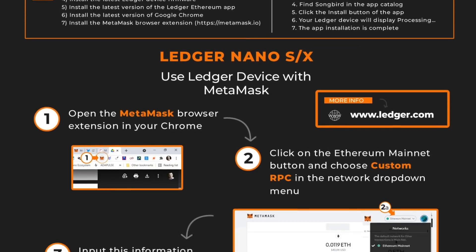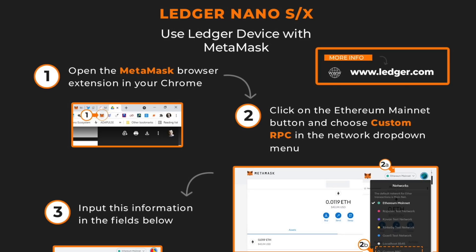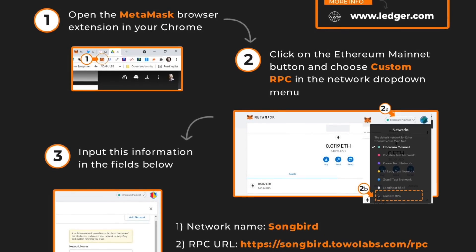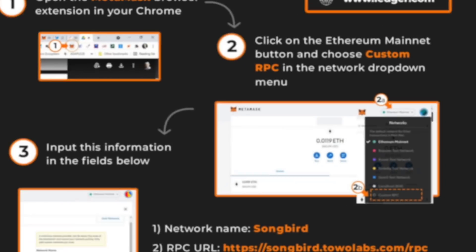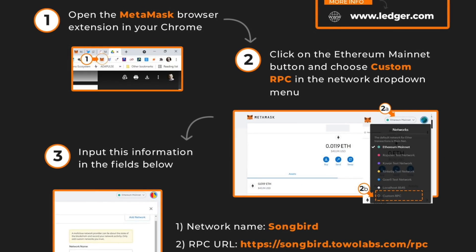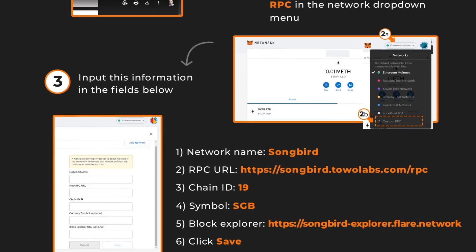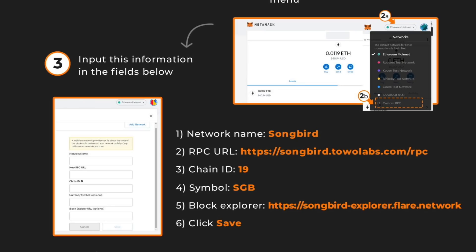Once you've completed the prerequisites, open the MetaMask browser extension in Chrome — available at metamask.io. Log in, then click the Ethereum Mainnet button and choose Custom RPC from the network dropdown. To create the custom RPC, enter the following details: Network Name — Songbird; RPC URL — songbird.20labs.com/rpc; Chain ID — 19; Symbol — SGB; Block Explorer — songbird-explorer.flare.network. Then click Save.